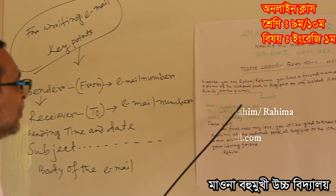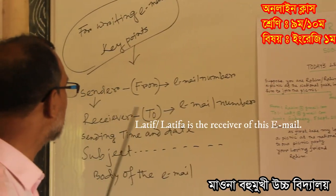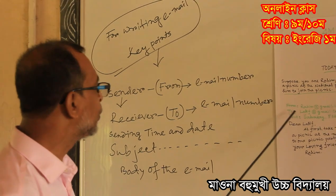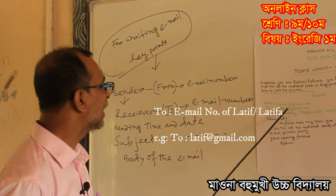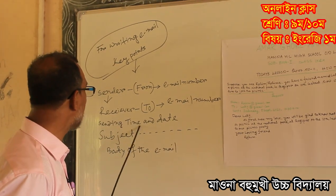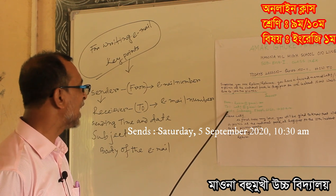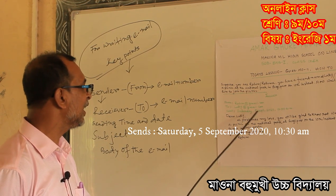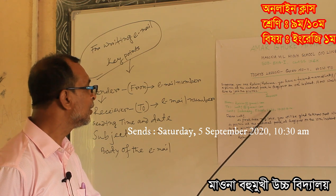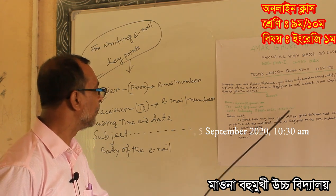Next is the receiver — that means 'To': Lotif at gmail dot com. Next is the sending time and date — that means 'Sent': Saturday, 5th September 2020, 10:30 a.m.